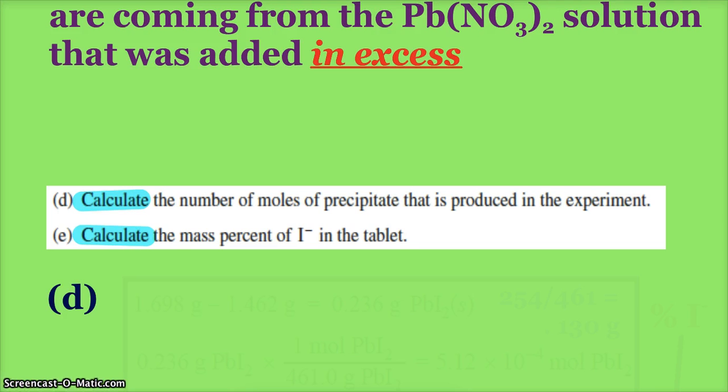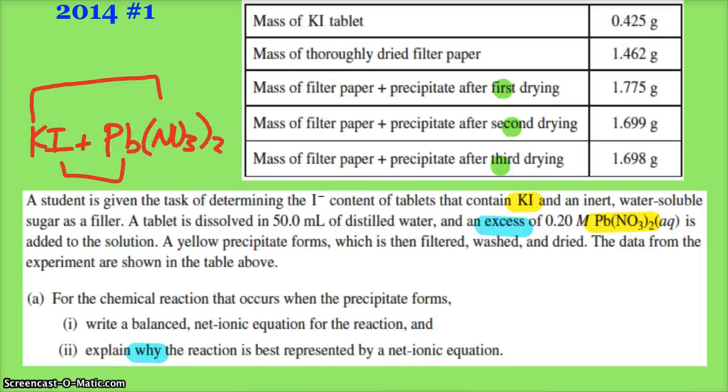Parts D and E: some good friends—calculate, calculate. Calculate the number of moles of precipitate that is produced in the experiment and the mass percent of the iodide in the tablet. So moles of precipitate: we have to come up here and make sure we know what data we're looking at. We know that the dried filter paper is 1.462 grams, and then you need to know which of these masses should you choose. I would choose the third drying because 1.698 looks like that's our settled on constant mass.